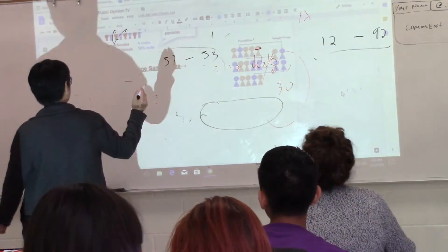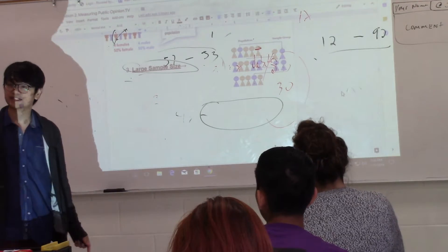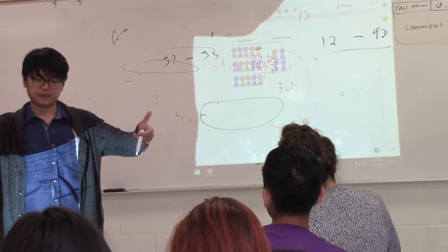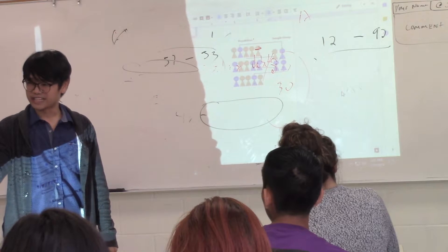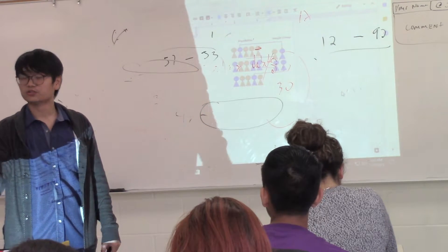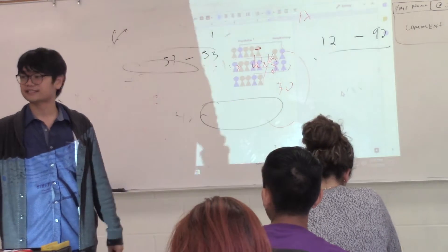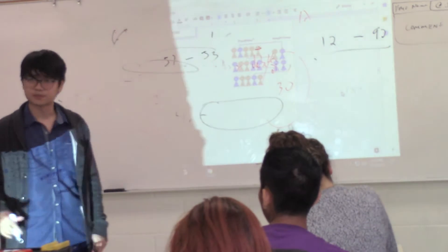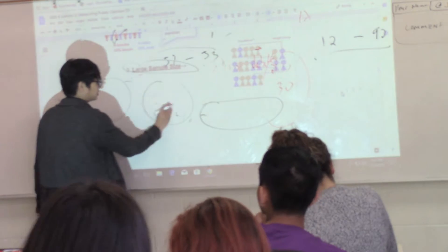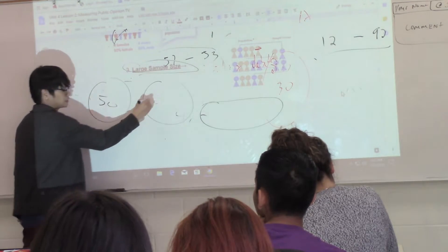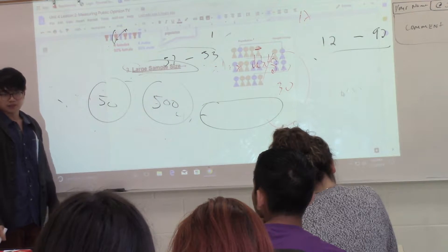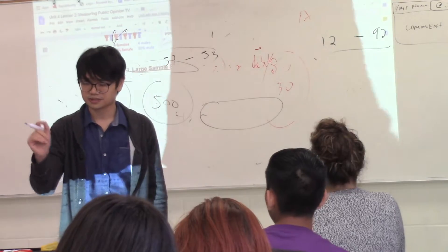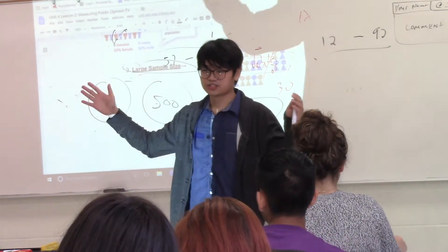The next key to an accurate and scientific poll is a large sample size. The more people you ask, the better your poll will be. What happens to your sampling error as your sample size grows? It goes down, because you're getting closer and closer to the actual number. The bigger the sample size, the smaller the sampling error and the more accurate your results. If there are 4,000 students in a school, a poll of 500 students is more trustworthy than one of 50.